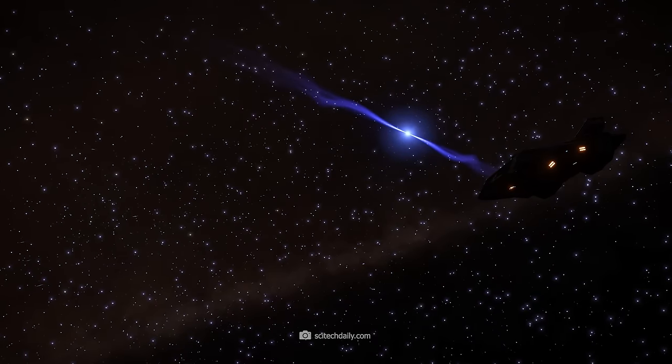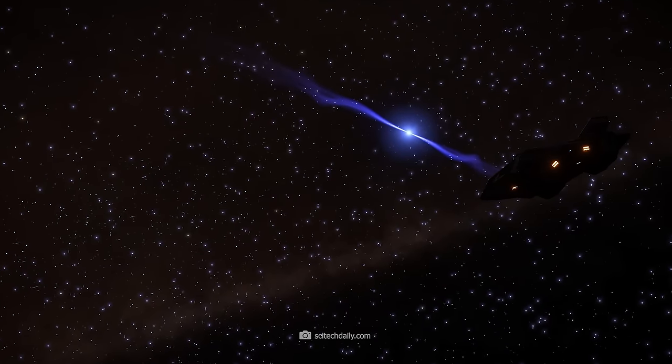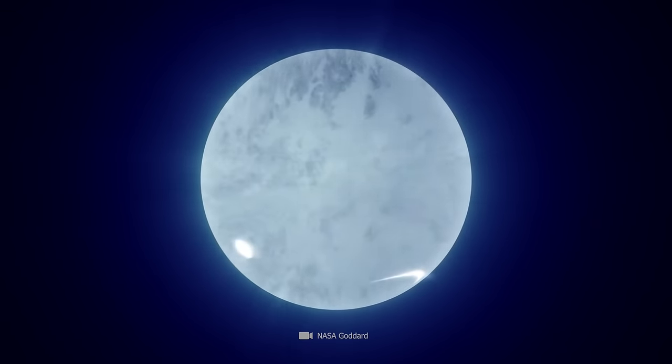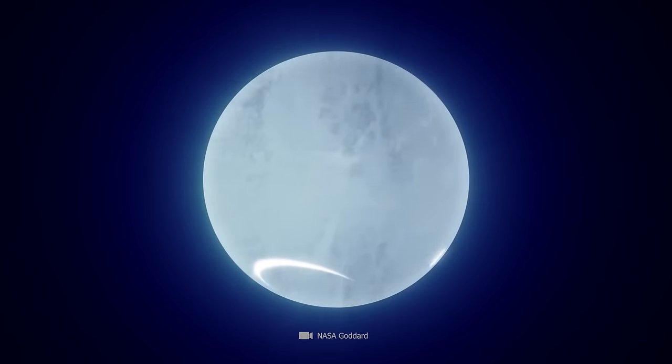Some pulsars, such as PSR J1748-2446AD, reach breathtaking rotational speeds of up to 716 revolutions per second.